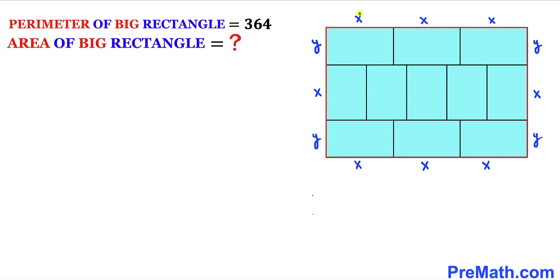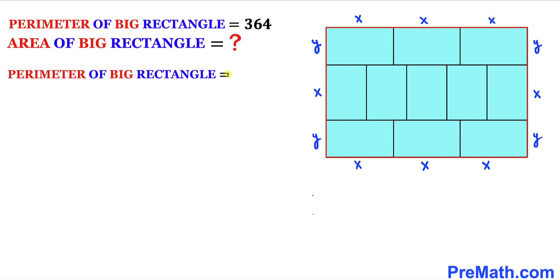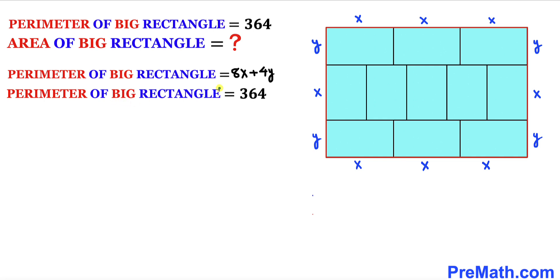The perimeter of this big rectangle is going to be the sum of all these individual lengths. We have 3x, and 3x on the other side — that gives 6x, plus 7x, plus 8x. So one dimension sums to 8x. For the other dimension, y + y + y + y gives us 4y. So the perimeter is 8x + 4y = 364.